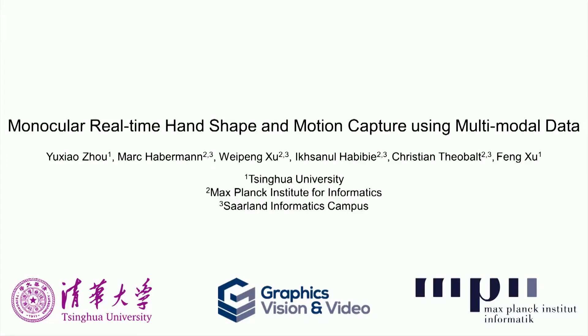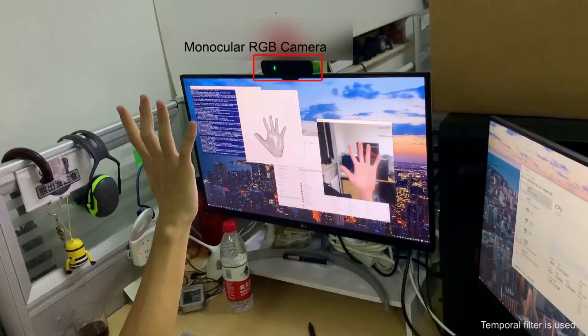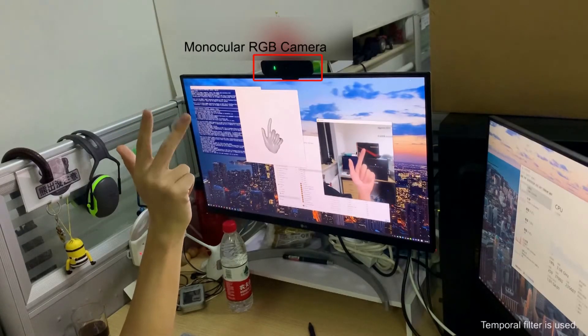We present monocular real-time hand shape and motion capture using multimodal data. Our work runs at over 100 frames per second and outputs joint angles ready for model animation.